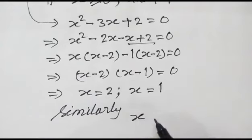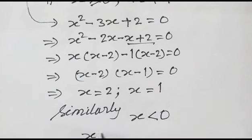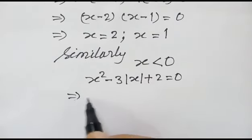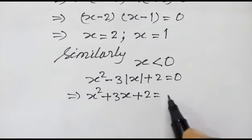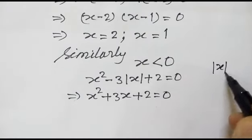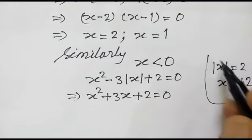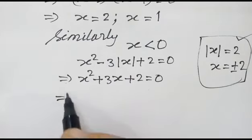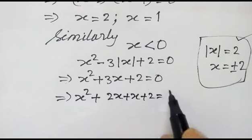Similarly, if x is less than 0, the equation x squared minus 3 mod x plus 2 is equal to 0 can be written as x squared plus 3x plus 2 is equal to 0, since mod x equals negative x when x is less than 0. We should note this point. Now this expands as x squared plus 2x plus x plus 2 is equal to 0.